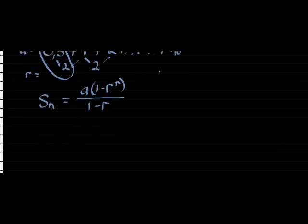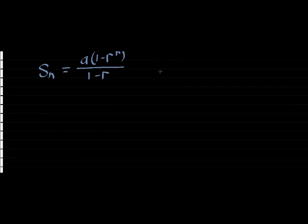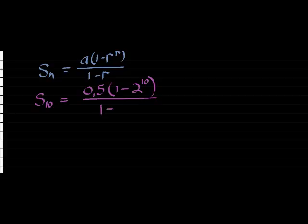In this case, we see that we want to sum up the 10 terms, where our first term was 50 cents, so 0.5. Our constant ratio is 2. That's going to have an exponent of 10, and we're dividing by 1 minus 2.